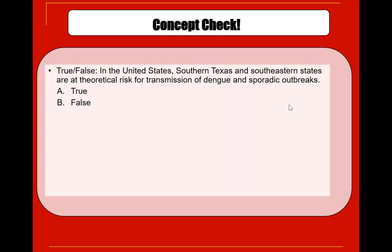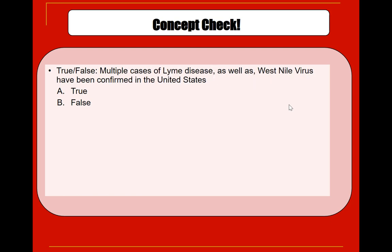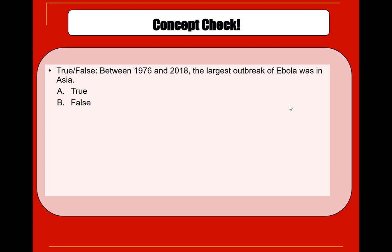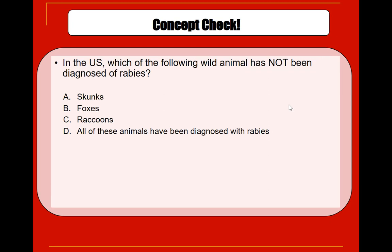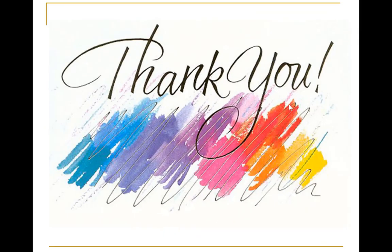Quick concept checks: True or false — in the United States, southern Texas and southeastern states are at theoretical risk for transmission of dengue and sporadic outbreaks. True. True or false — multiple cases of Lyme disease as well as West Nile virus have been confirmed in the United States. True. True or false — between 1976 and 2018 the largest outbreak of Ebola was in Asia. False — it was in Africa. Which of the following wild animals has not been diagnosed with rabies? The answer is D — all of these animals have been diagnosed with rabies.